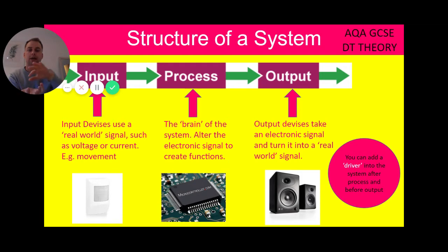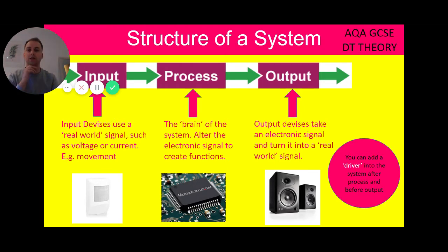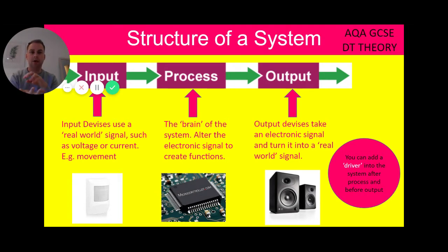So between process and output, you can have something called a driver. The driver interrupts that signal — it interrupts between the process and the output or offers different alternatives. Some of those alternatives might be the type of sound. So when we walk past the motion sensor, it might sound different depending on who walks past. The process is the same, but the driver just interrupts and changes that process slightly — it alters the brain of the system.